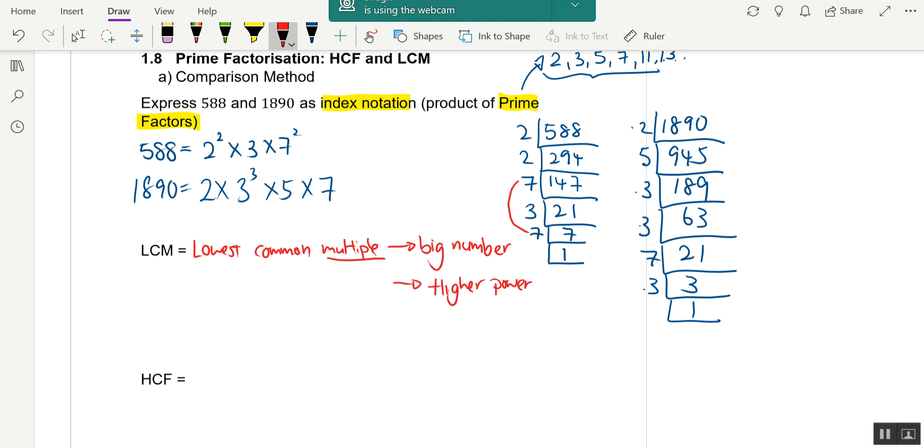What do I mean by higher power? First, I look at 2² and 2 - which one gives you the higher power? That will be 2². Next one: 3 and 3³, we take 3³. Then for 7, we multiply by 7².